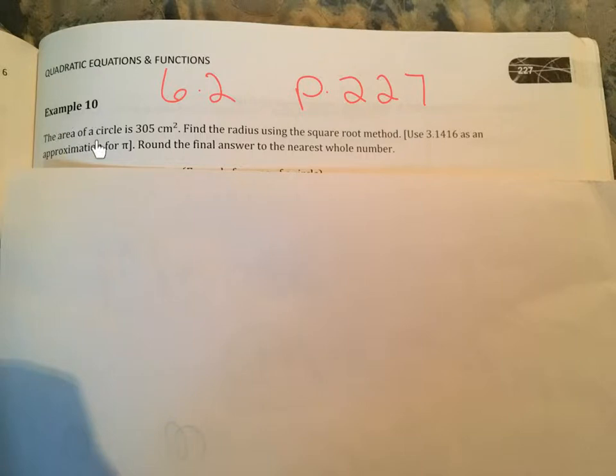Alright, if we're going to be dealing with the area of a circle, we're going to need to start by writing the formula for area of a circle, which I'm hoping that you know already. Area is pi r squared. And then you're going to take that area and start to substitute in any information that you have from your question here. We know that the area is actually 305, so we can replace A with 305. That's going to be the first step.